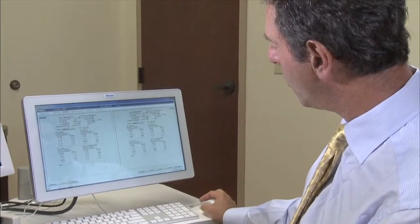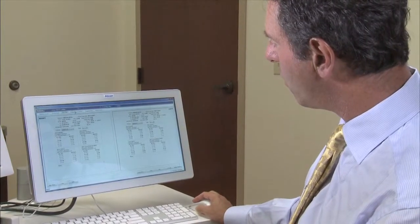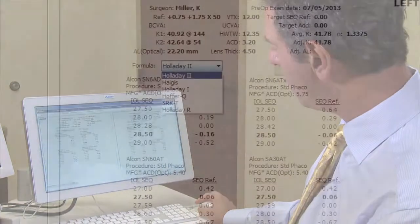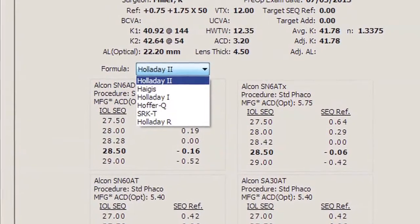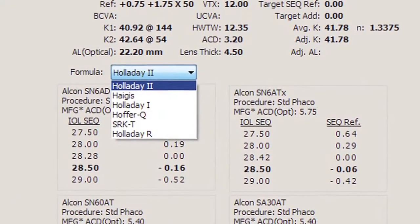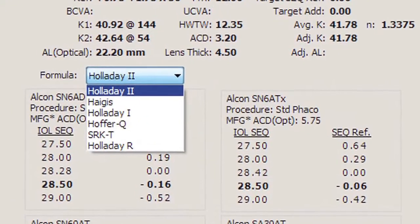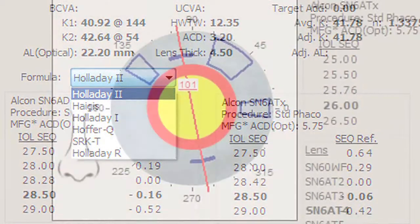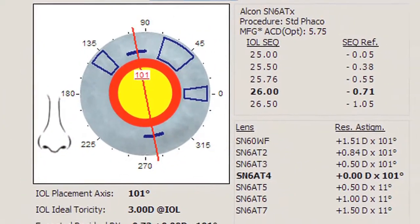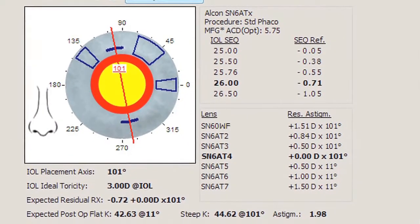The Veryon reference unit allows surgeons to efficiently select the IOL and lens power for their patients by providing multiple established formulas in a simple drop-down format. Most importantly, the Veryon reference unit also provides comprehensive astigmatism management.